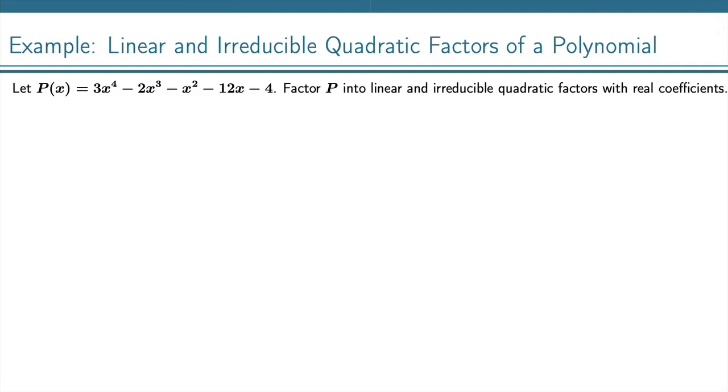We'll start by making a list of our possible rational zeros by using the rational zeros theorem. This is the theorem where we take the factors of the constant term, 4, and divide by the factors of the leading coefficient, 3. So we take the factors of 4, that's 1, 2, and 4, and we'll be dividing those by the factors of 3, which are 1 and 3.